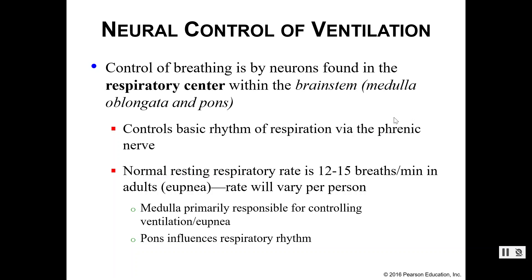Your respiratory center controls respiration through your phrenic nerve, which innervates your diaphragm. Normal resting respiratory rate — if you're just sitting in your chair relaxing, reading a book, listening to lectures or music — is going to be about 12 to 15 breaths per minute. This is referred to as eupnea. This rate will vary person to person; it's just an average of about 12 to 15 breaths a minute. The medulla oblongata is primarily responsible for controlling ventilation, or controlling eupnea.